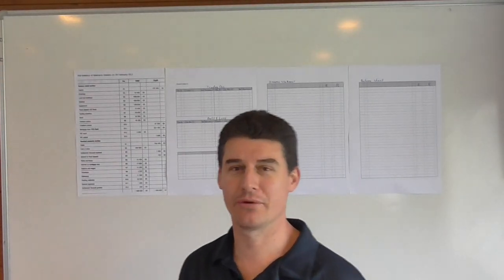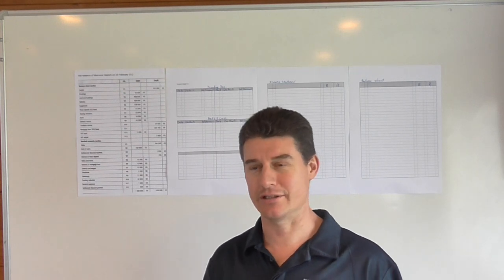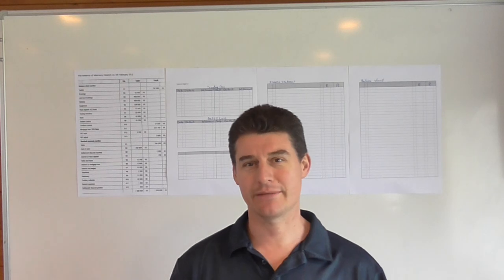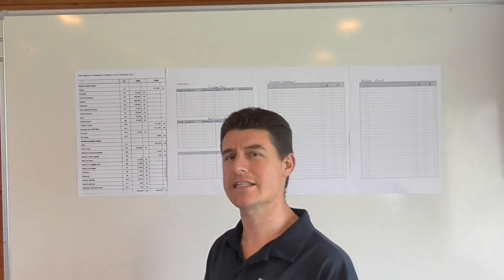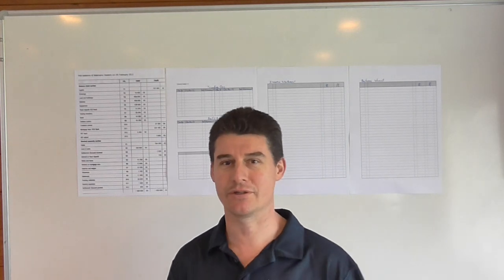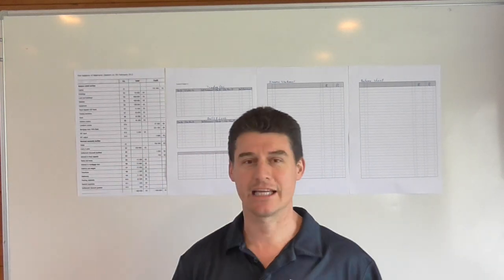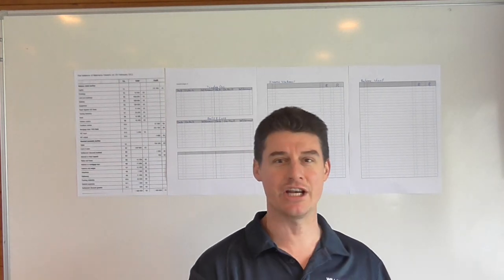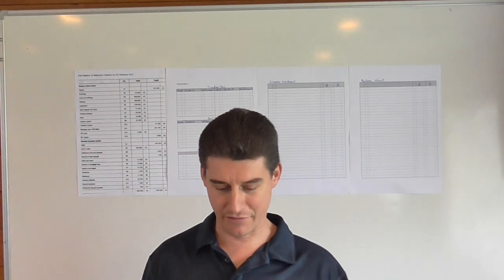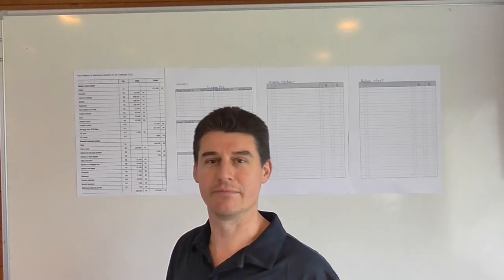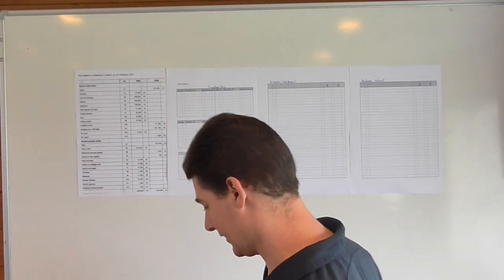Hi guys and welcome back. Just when I thought I was done with bookkeeping to trial balance, I got emailed and they say that a section has been added to the subject consisting of the financial statements — your income statement and your balance sheet. When you do the financial statements subject you will do this in a lot more detail, so this is just a basic example added to the bookkeeping to trial balance subject. It should be in your textbook on page 240.